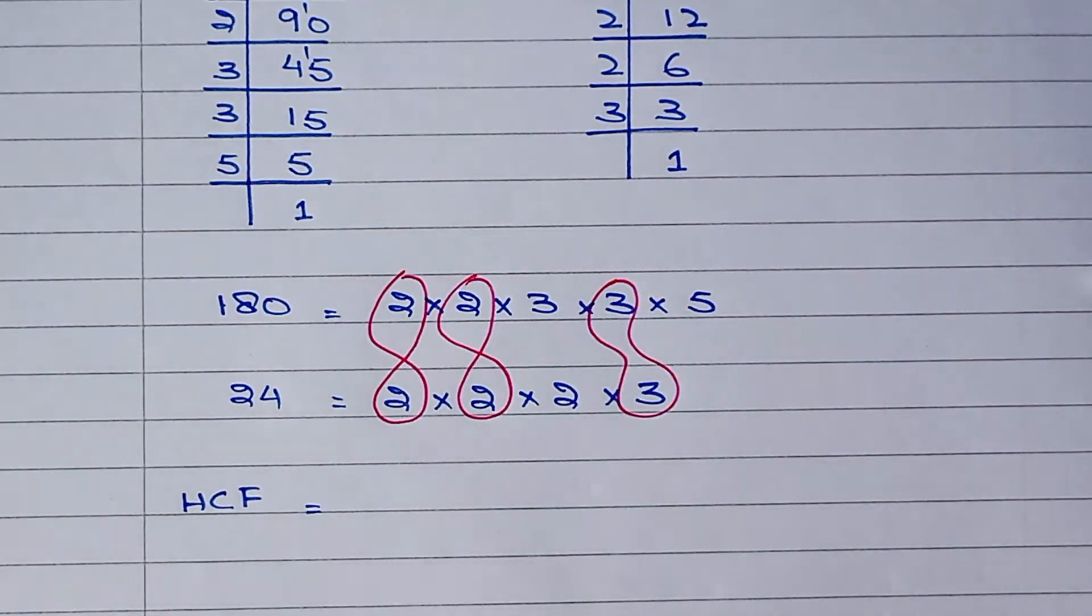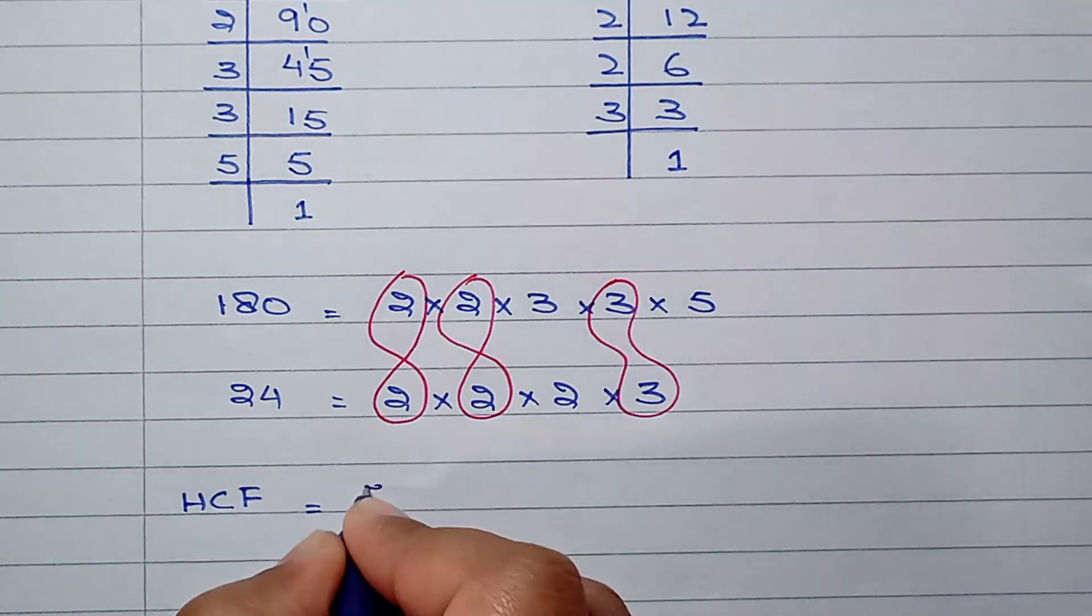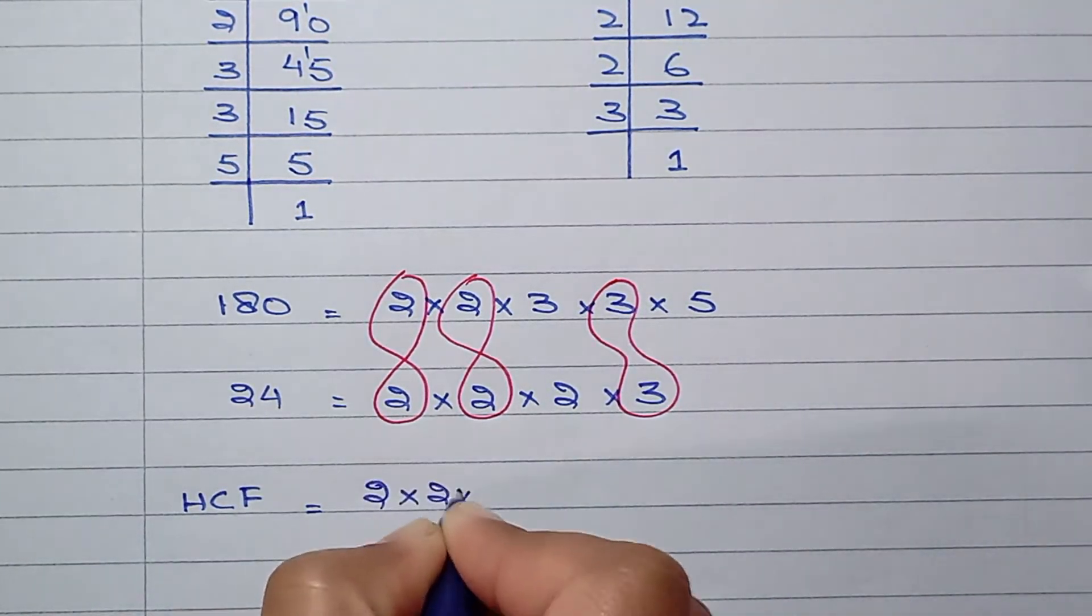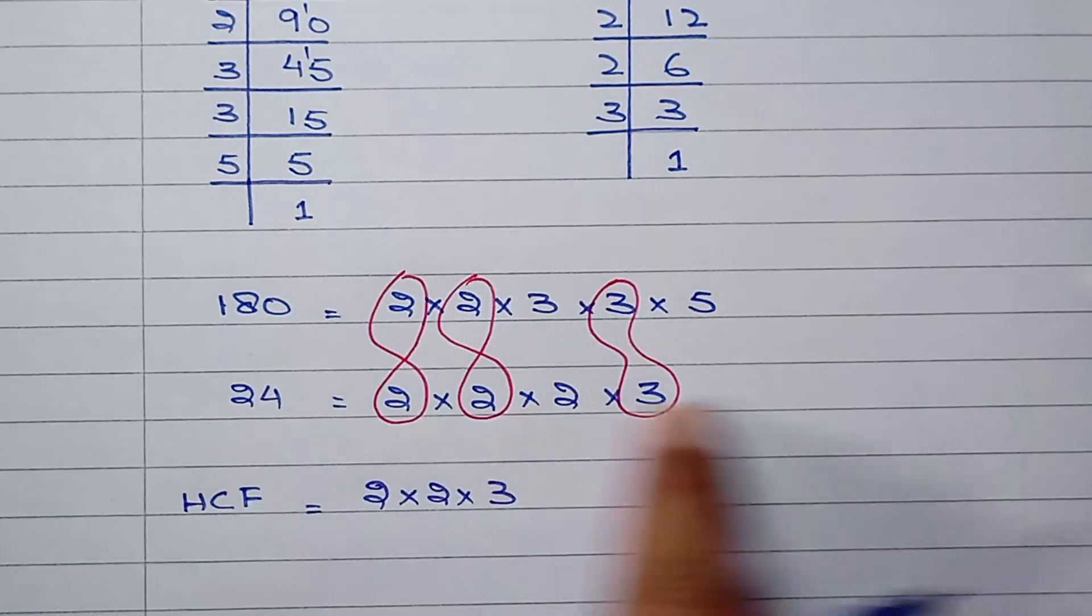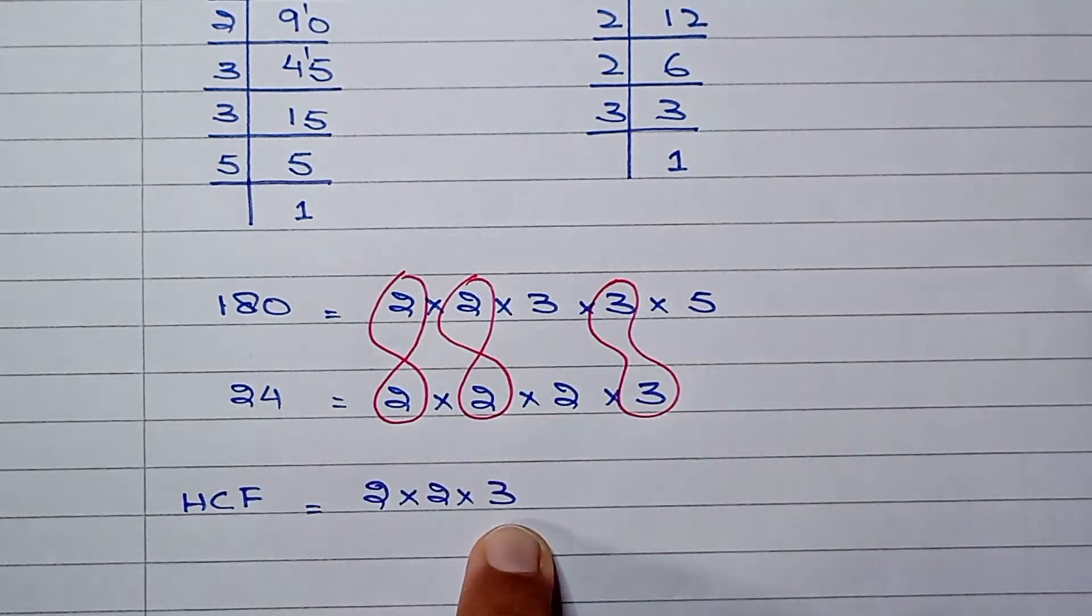We need to write down all the common factors once and multiply them, and we will get the HCF: 2 times 2 times 3. In both prime factorizations we have these common factors. So 2 times 2 is 4, and 4 times 3 is 12. So the HCF of 180 and 24 is 12.